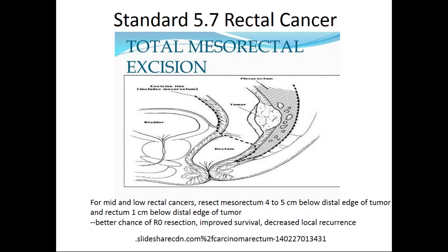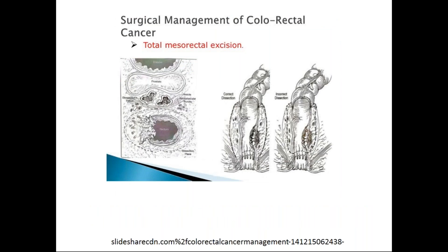Standard 5.7 pertains to rectal cancer and total mesorectal excision. For mid and low rectal cancers, we need to aim to resect the mesorectum four to five centimeters below the distal edge of the tumor, and the rectum one centimeter below the distal edge. By doing this, we have a better chance of an R0 resection, better survival, and decreased local recurrence. The diagrams show the fascial plane — the Denonvilliers fascia — which, by following this plane, helps avoid neural structures and other important vascular structures. The diagram also illustrates a correct dissection versus an incorrect, incomplete dissection.